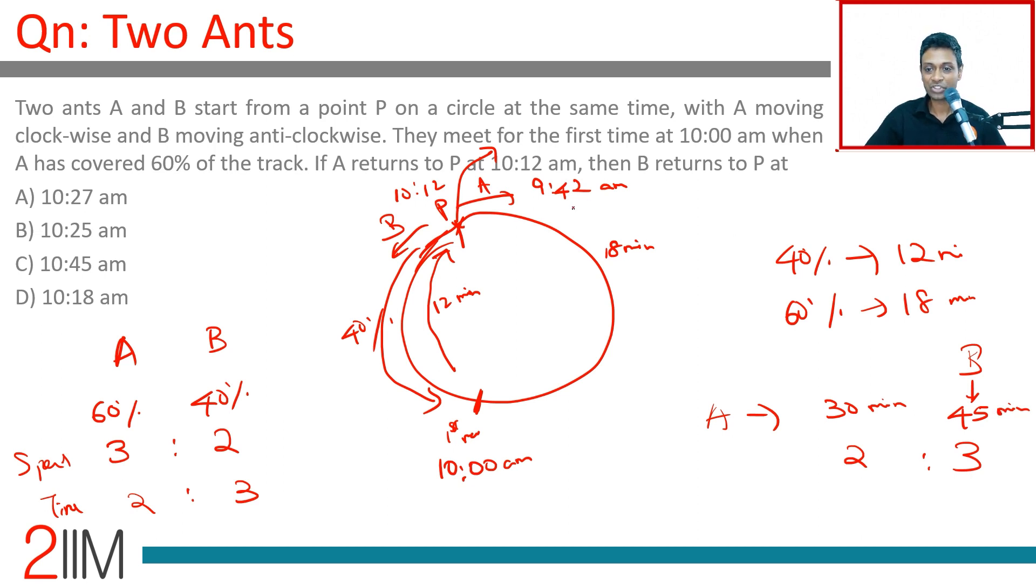If B starts at 9:42, 9:42 plus 45 minutes: 18 minutes takes us to 10:00, and then a further 27 minutes takes us to 10:27. B takes 15 more minutes than A. A reaches at 10:12, B will reach at 10:27.